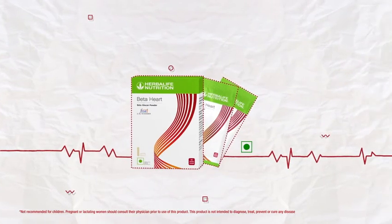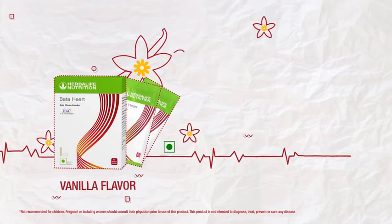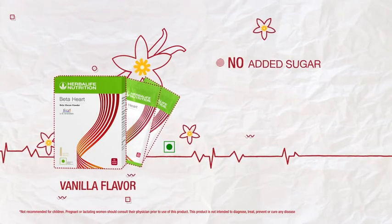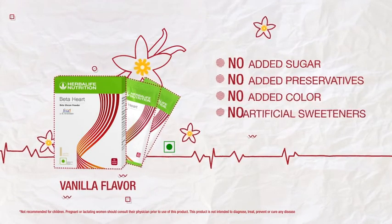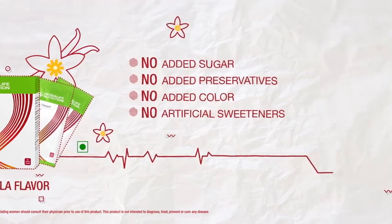Beta Heart is available in easy-to-carry single-serve sachets and comes in natural vanilla flavor. It contains no added sugar, preservatives, color, or artificial sweeteners.